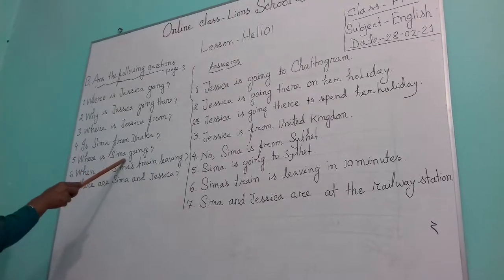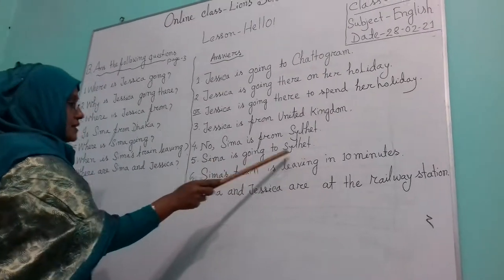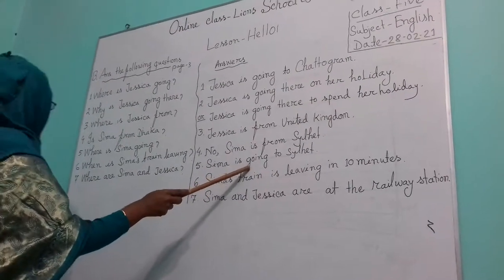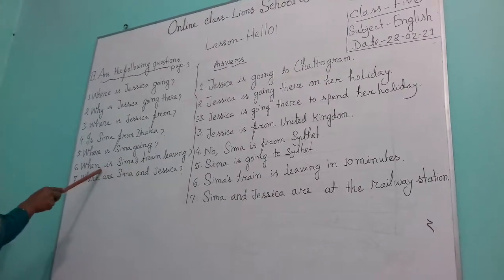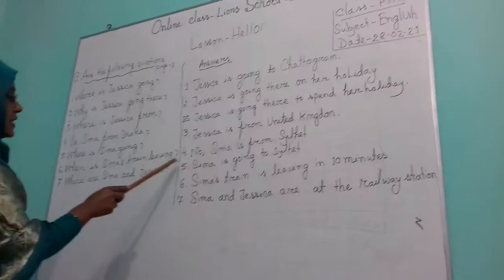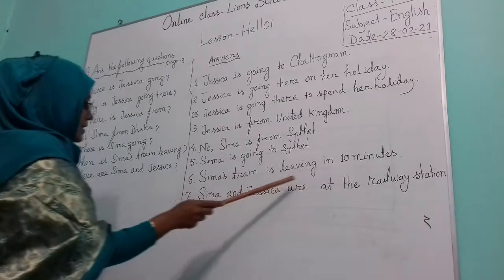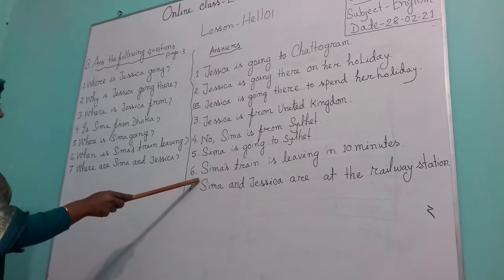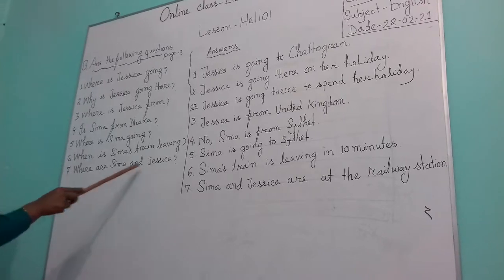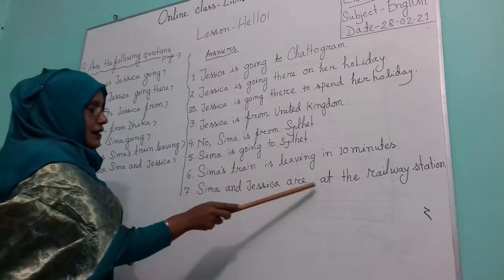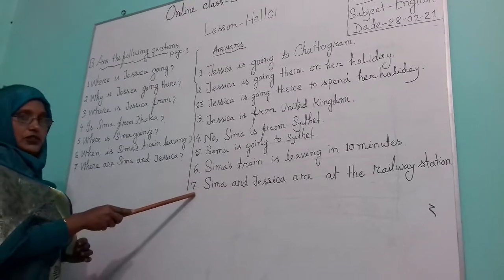Then question 5: Where is Shima going? Shima kothai jatche? The answer is: Shima is going to Sylhet. Then question 6: When is Shima's train leaving? The answer is: Shima's train is leaving in 10 minutes. The last question is: Where are Shima and Jessica? The answer is: Shima and Jessica are at the railway station.